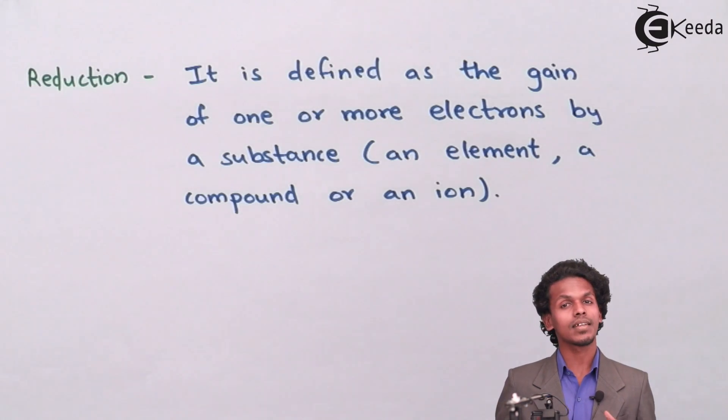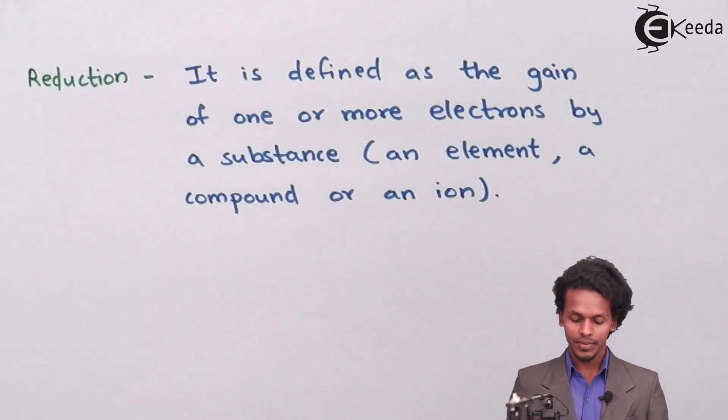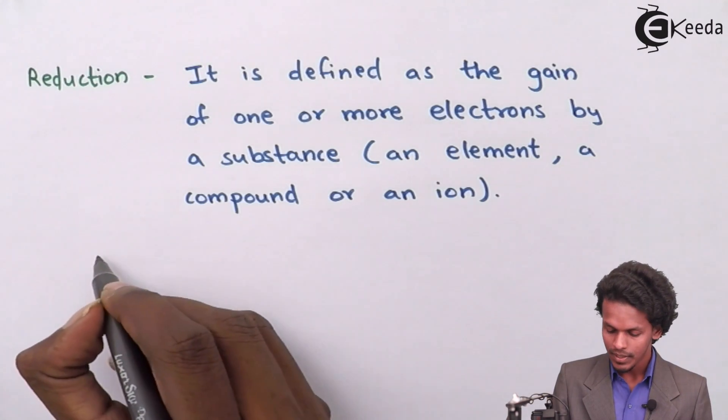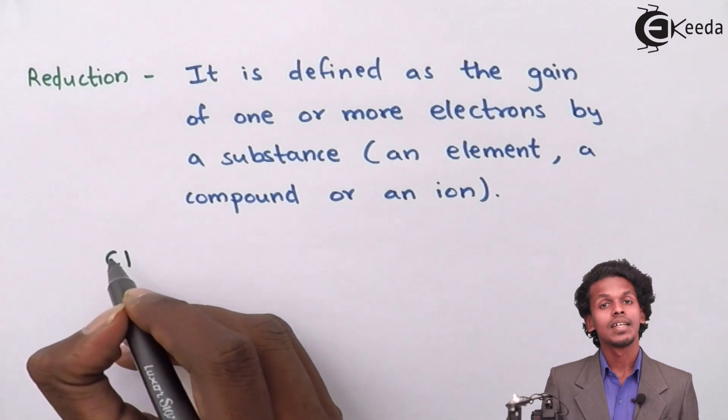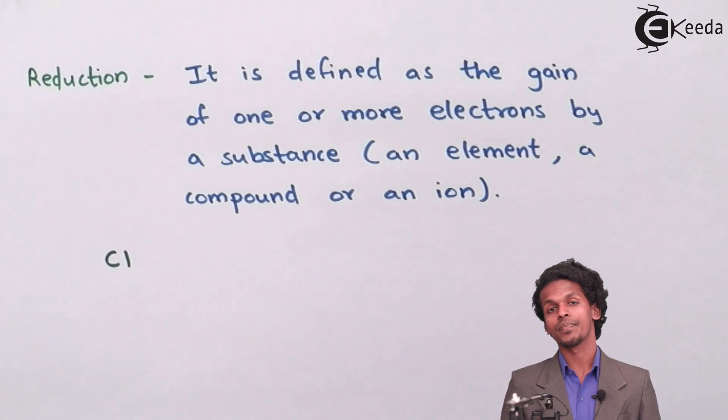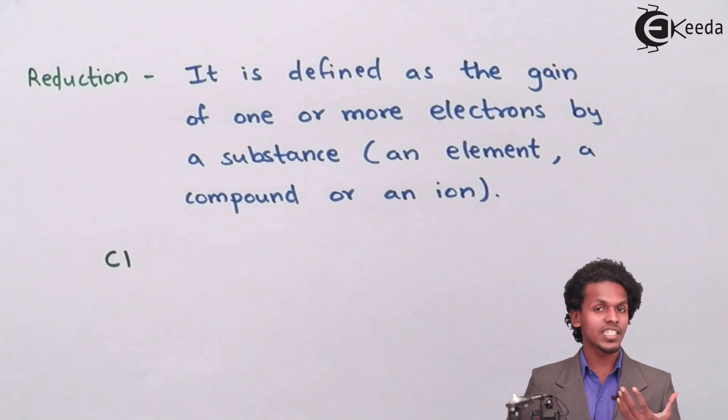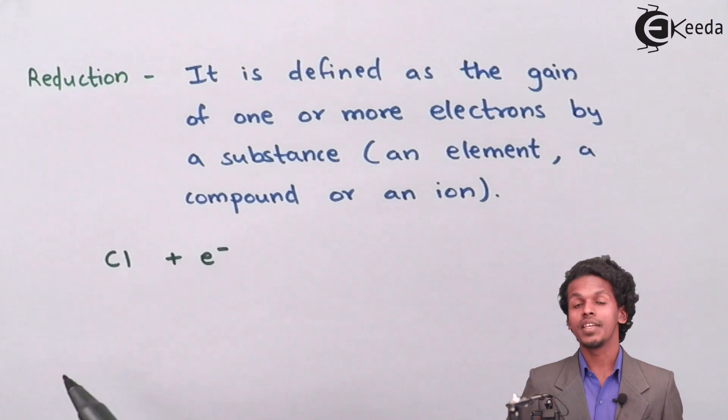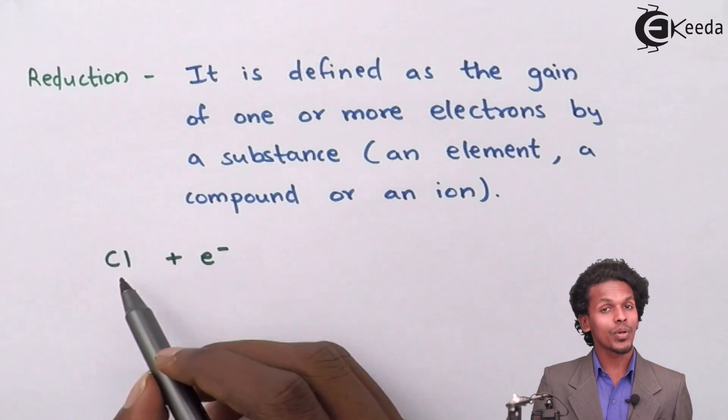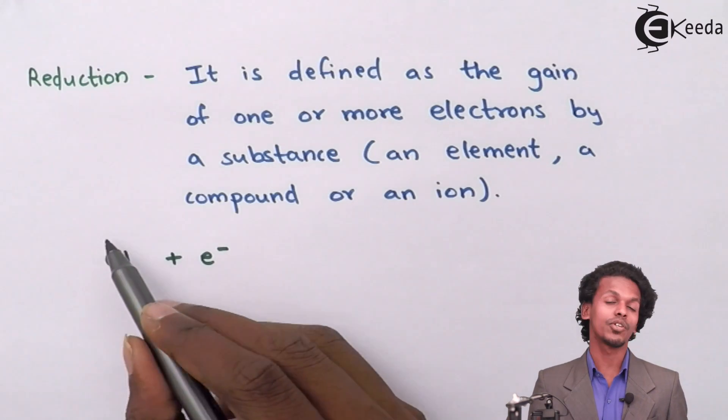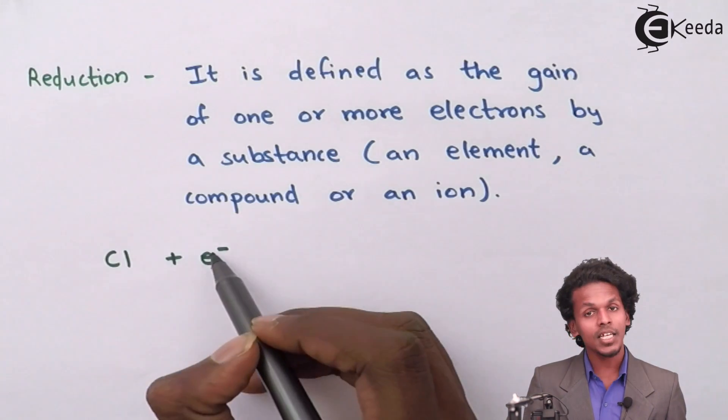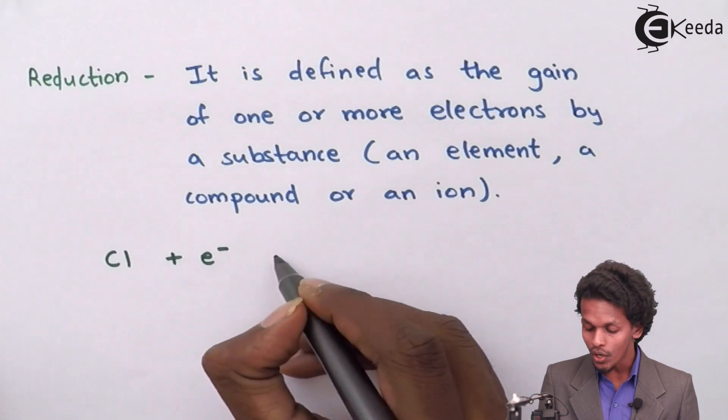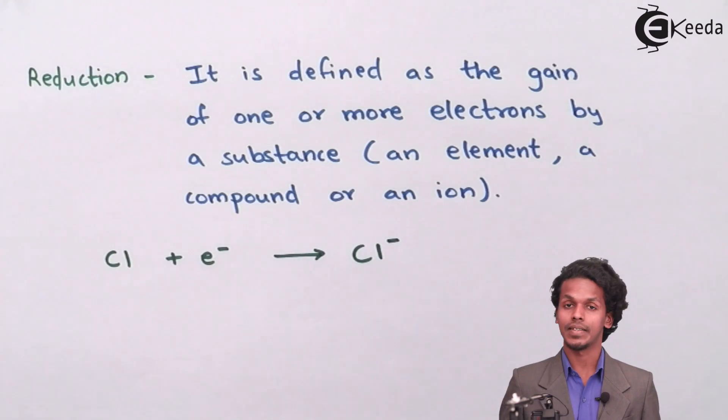Suppose I give you an example in which usually this happens with non-metals. Suppose Cl atom, that is chlorine atom, when it accepts an electron—the initial charge on this chlorine atom is zero. But once it accepts an electron or gains an electron, then the overall charge becomes Cl minus.